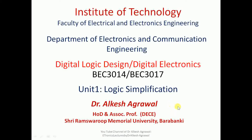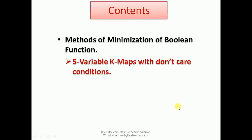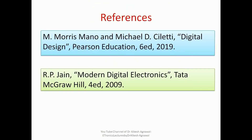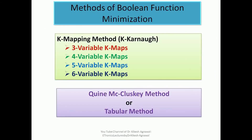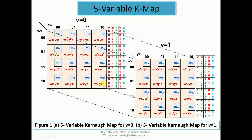Hello everyone, I am Dr. Alkesh Agrawal. In this lecture I'll mainly discuss five-variable K-maps with don't care conditions. Reference books include Digital Design by M. Morris Mano and M.D. Ciletti, and Modern Digital Electronics by R.P. Jain. We know there are mainly two methods to reduce a boolean function: the Karnaugh mapping method and the tabular method, also known as the Quine-McCluskey method.